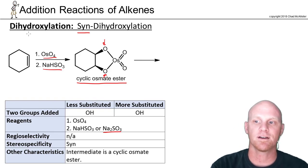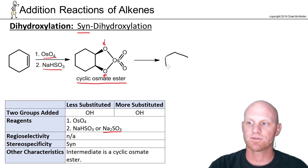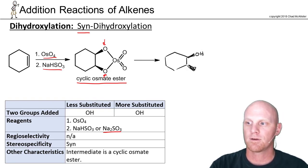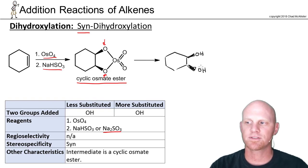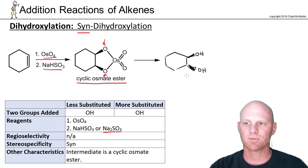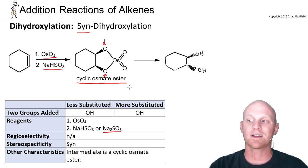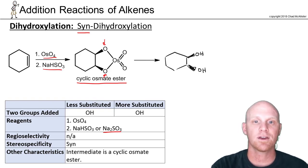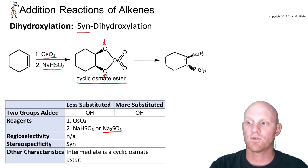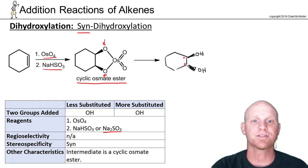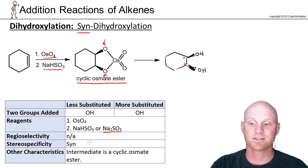We can see that eventually we're just going to form an OH here and an OH there. Again, you don't have to know the entire mechanism — I just wanted to show the intermediate so you can see how it ends up as a syn addition. In this case, if you take a look, we did form a couple of chiral centers. When you form two chiral centers, your stereospecificity matters, and this is definitely syn addition.